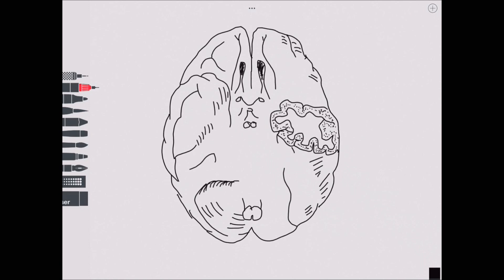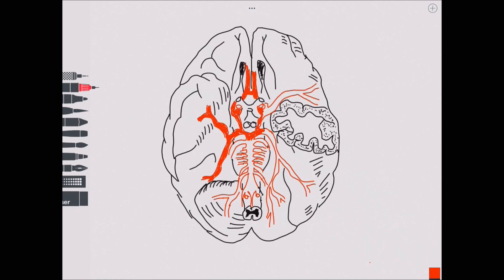To work out the likely symptoms, you first need to know the distribution of the artery in question, in this case the anterior cerebral artery, and secondly, know the function of the areas of the brain it supplies.